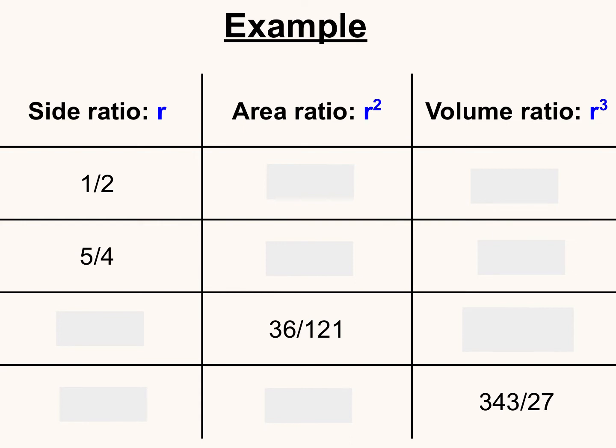So let's start with the one-half side ratio. If I'm given the side ratio to find the area ratio, we simply square whatever that side ratio is. So if I do one-half to the second power, I square one, I square two to get one over four. Then to get our volume ratio, we cube our original side ratio. So I do one to the third power and two to the third power to get one over eight.